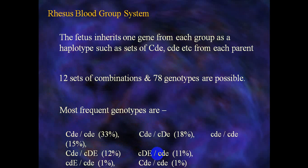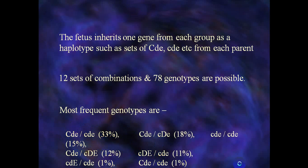The fetus inherits one gene from each parent as a haplotype. From each parent, a set of CDc combinations is passed. Up to 12 sets of combinations and 78 genotypes are possible. The most frequent genotypes and their percentages are shown in this slide.